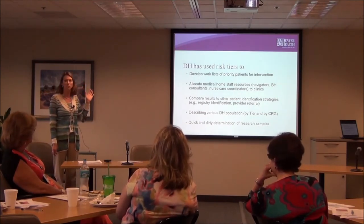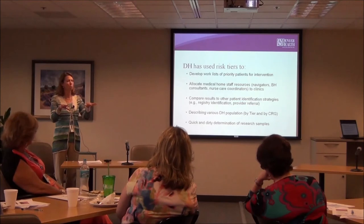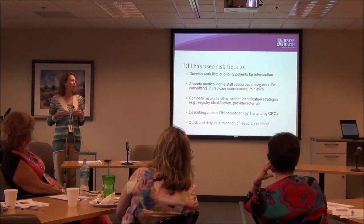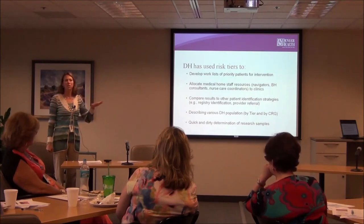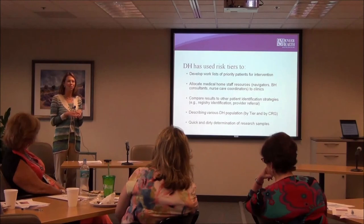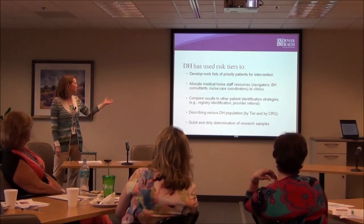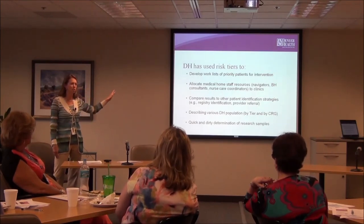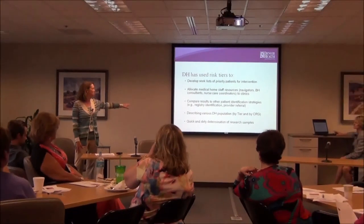To review, we use risk tiers on the front lines by sending patient lists to individual medical home-based providers, and to allocate staff across clinics based on where the high needs are. We use it to cross-validate other identification methodologies — comparing our children's special healthcare needs registry with CRGs to see what each method finds. In the context of healthcare reform, we've examined our uninsured population by risk tier to anticipate pent-up demand and gear up as a health system.